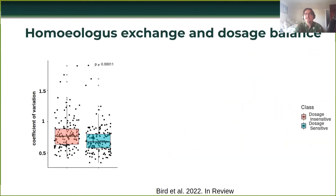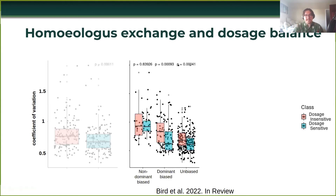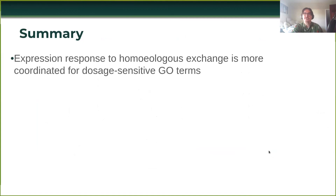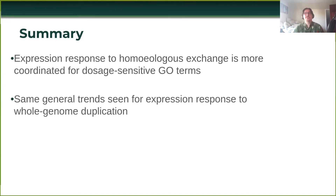My question is: does homeologous exchange show the same sort of dosage constraint on expression response? There is an expression response — homeologous exchange does change the expression of genes when you change copy number that way. And again, I find that dosage-sensitive gene ontology terms have a more coordinated expression response than dosage-insensitive ones, so it appears the same dosage constraints are acting on homeologous exchange. The same results hold for subgenome dominance: gene pairs biased towards the non-dominant subgenome are not showing a more coordinated response, but dominant and unbiased ones are. And there are differences between generations and an increase in variance over time.